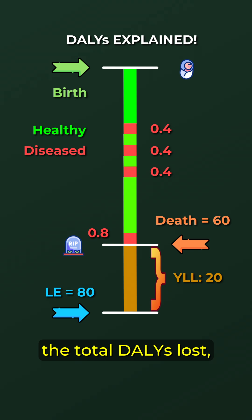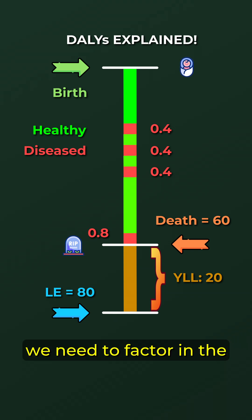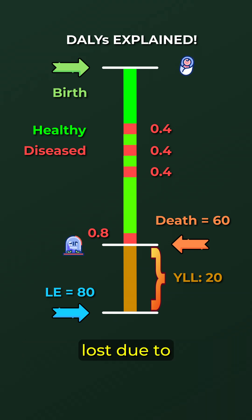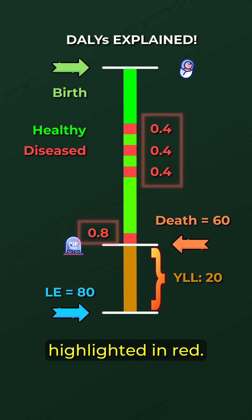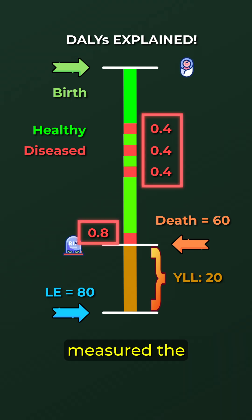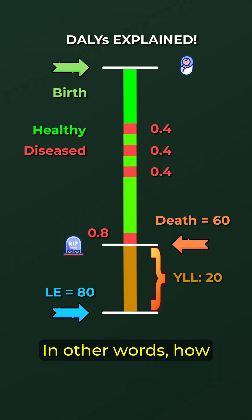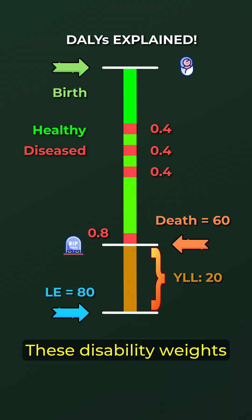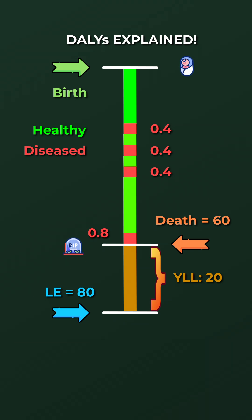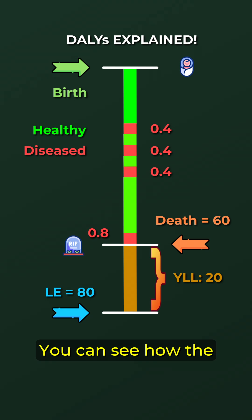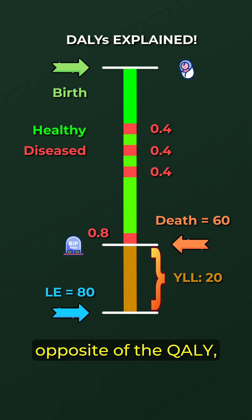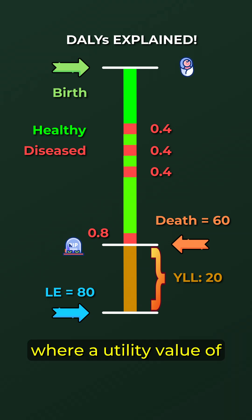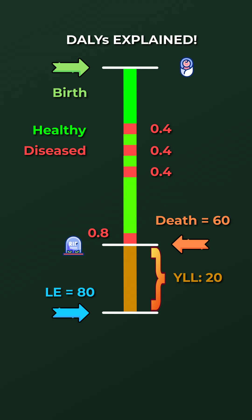To be able to calculate the total DALYs lost, we need to factor in the years of healthy life lost due to disability as well. So we need to look back at the periods of sickness highlighted in red. For each period, we measure the disability weight — in other words, how severe the disease was and for how long our individual was affected. These disability weights can be anything between 0 and 1, whereby 1 is death. You can see how the DALY is the exact opposite of the QALY, where a utility value of 1 represents perfect health.